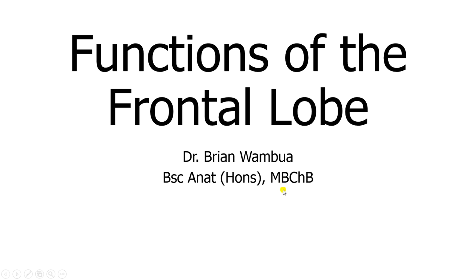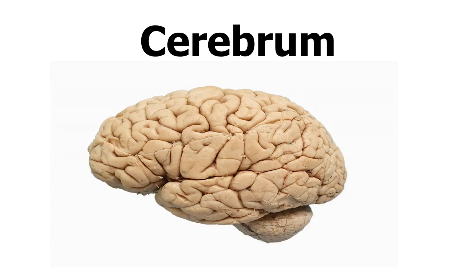Welcome back to my channel. Today I'll be discussing functions of the frontal lobe of the human brain. The frontal lobe extends from the frontal pole to the central sulcus, then from the border of the superior longitudinal fissure to the lateral sulcus.